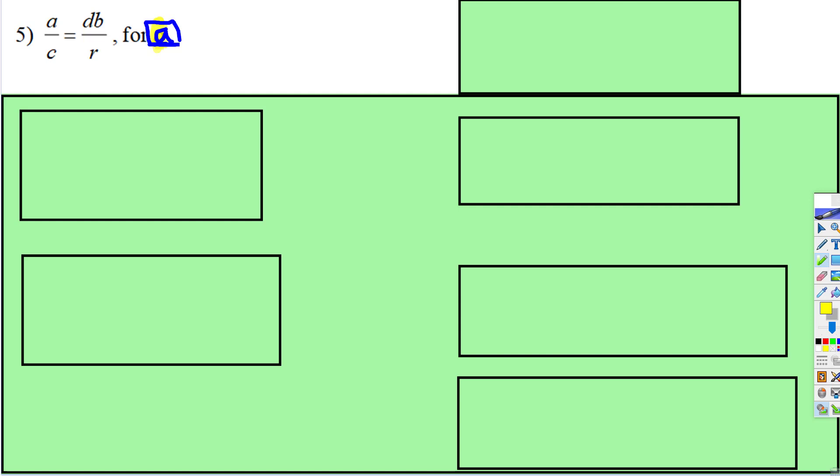In this case, we need to get that a by itself. So I wrote it just a little bit more obviously by using a different color, and notice a is almost by itself - it just has a dividing c. So the only thing we've got to do is multiply both sides by c.